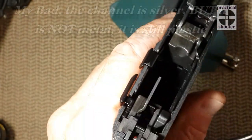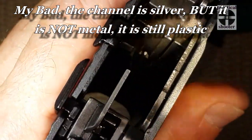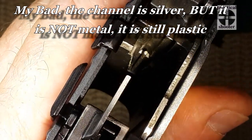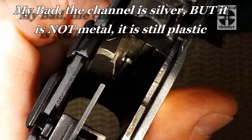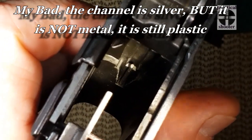The inside of the channel, the channel is metal. It used to be plastic and people had issues with it because the plastic wore out by removing and reinstalling the magazine release.